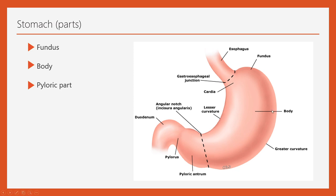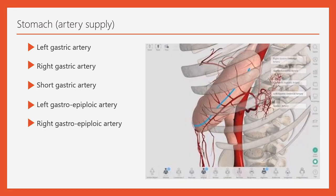The attachments of the greater curvature are the greater omentum, the gastrosplenic ligament, and the gastrophrenic ligament. The attachment of the lesser curvature is the lesser omentum.